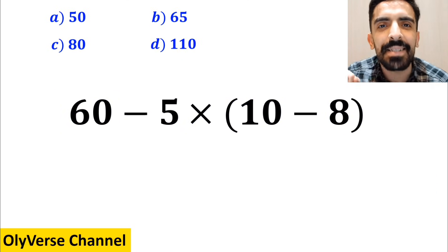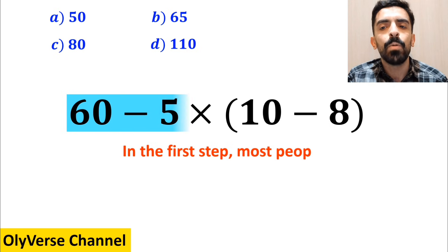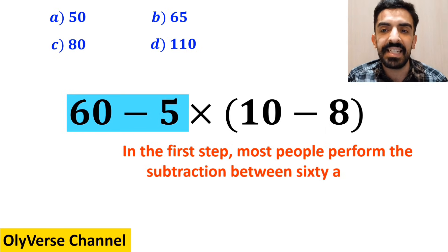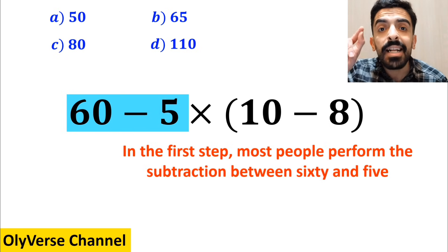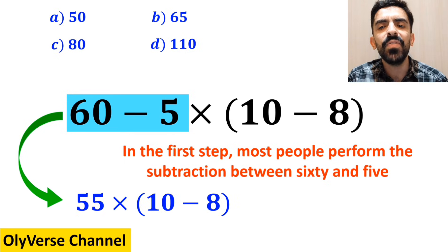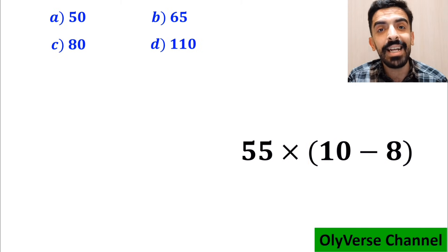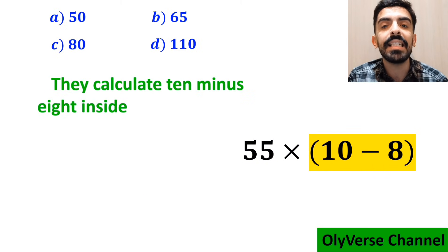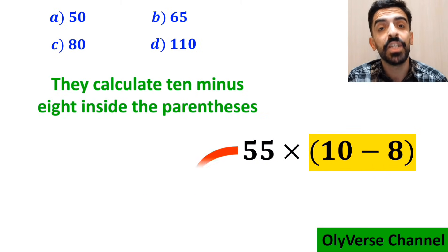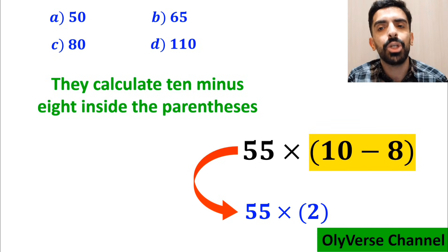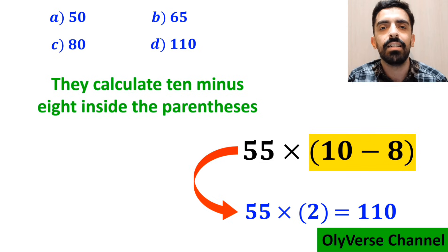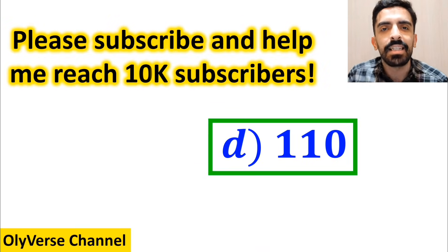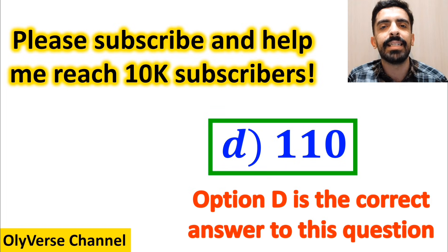Let's take a closer look and solve it together. In the first step most people perform the subtraction between 60 and 5, highlighted in blue. So this expression simplifies to 55 multiplied by open parenthesis 10 minus 8 close parenthesis. In the next step they calculate 10 minus 8 inside the parenthesis, which becomes 55 multiplied by 2, and finally they conclude the value must be equal to 110, quickly saying option D is the correct answer.